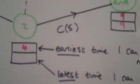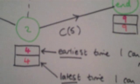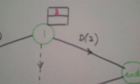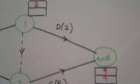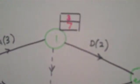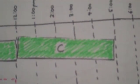Now I'm going to do a backward pass. It takes 9 hours to finish. The latest I can leave node 2 — since C takes 5 hours — is time 4. If I leave an hour later, the whole project is delayed. For node 1, D only takes 2 hours and I must finish by 9, so the latest I can leave node 1 is time 7.